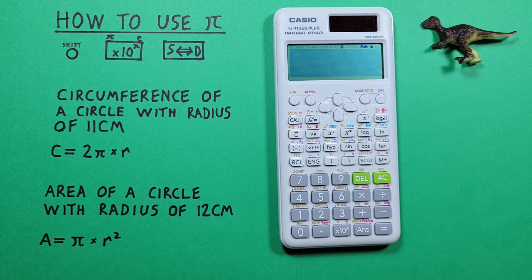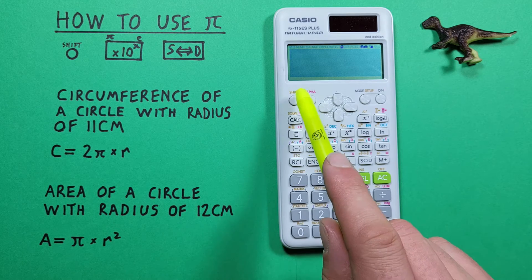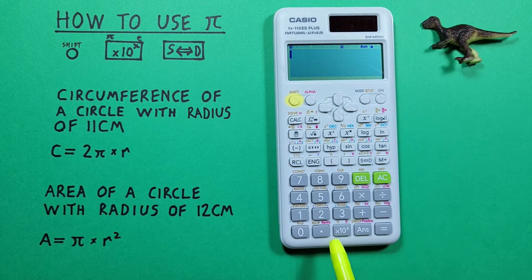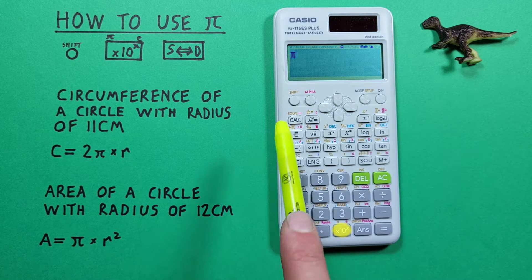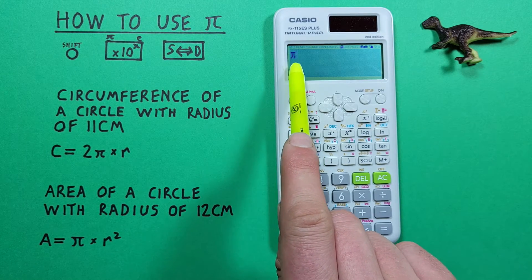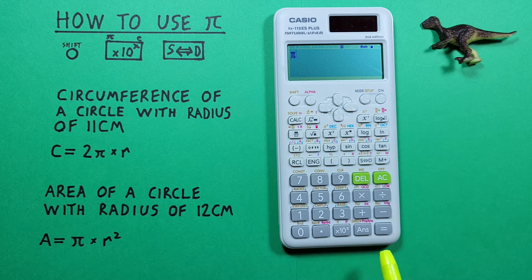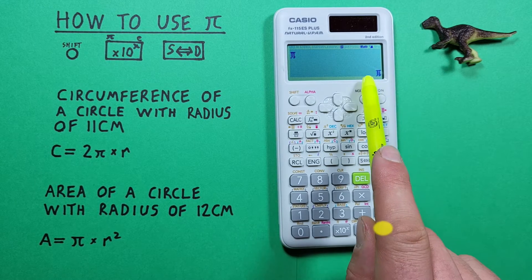If we just want to get the value of pi on our screen we can press shift and then the times 10 to the x key. We see we get the symbol for pi on our screen and if we press equals that goes down to our answer line.